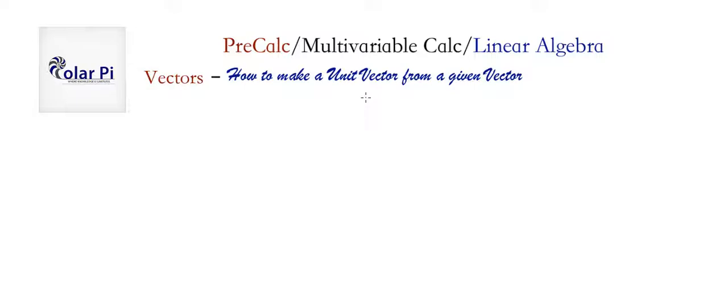A unit vector is a vector of length one. So what we're doing here is we're given a vector of a certain length, and then we're shrinking that vector until it has a length of one. Or if your vector is really tiny, then we're enlarging it until it has a length of one. So that's what we're doing.